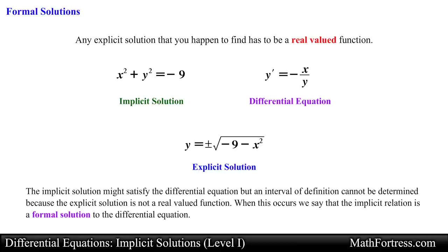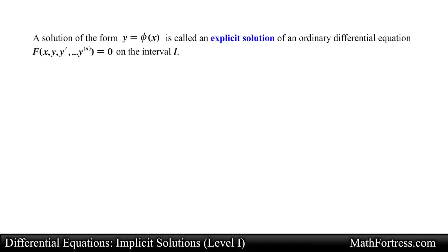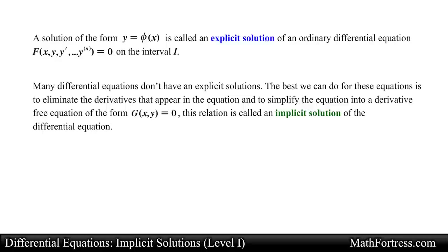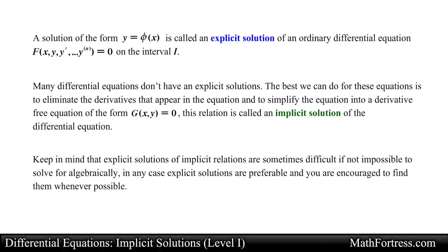When this occurs we say that the implicit relation is a formal solution to the differential equation. Keep in mind that the implicit relation is not a solution to the ODE since no interval of definition can be defined in any interval, but the relation just happens to formally satisfy the differential equation. To sum up: a solution of the form y equals phi of x is called an explicit solution of an ordinary differential equation on the interval i. Many differential equations don't have explicit solutions; the best we can do is to eliminate the derivatives that appear in the equation and simplify it into a derivative free equation of the form g of x and y equals 0. This relation is called an implicit solution of the differential equation. Implicit solutions are perfectly acceptable and in some cases necessary, as long as the equation actually defines y as a function of x.